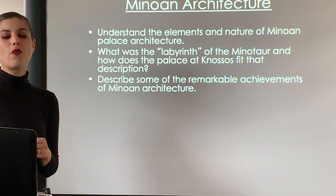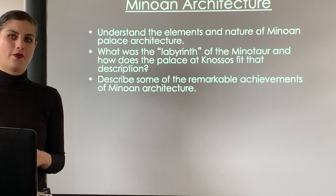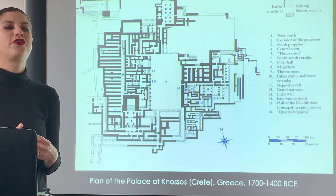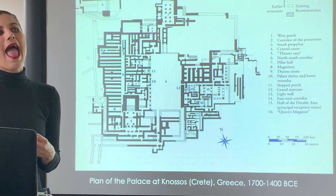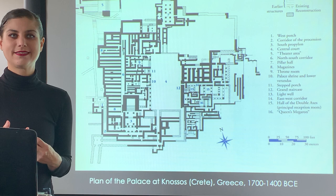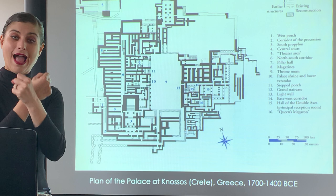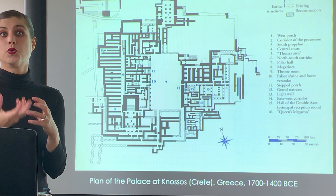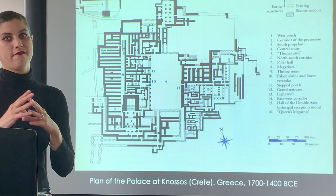The Palace of Knossos is famous as the believed site of the Minotaur story. When you hear about the Minotaur, you almost always learn about the Labyrinth - which means 'the House of the Double Axe.' At the Palace of Knossos, there is a lot of axe or double axe imagery in the murals and jewelry. Arthur Evans was convinced this was the Labyrinth of the myth.